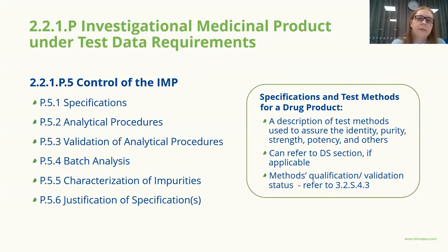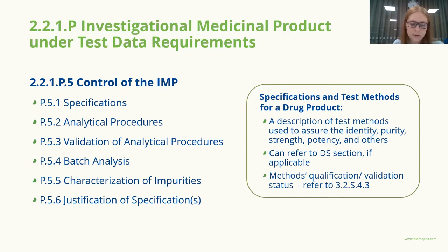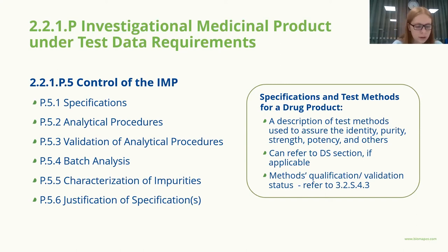For the control of the investigational medicinal product section, similarly to the drug substance specification, analytical methods that are not compendial should be described and validated. Batch analysis should demonstrate with data the quality of the product, and any additional impurities not covered in the drug substance section should be described. The provided specifications should be justified.